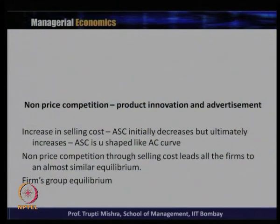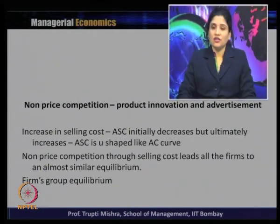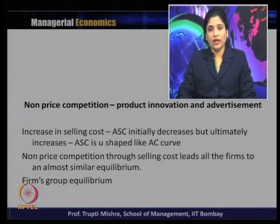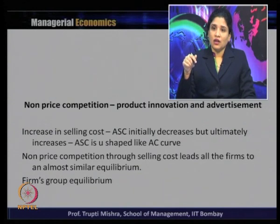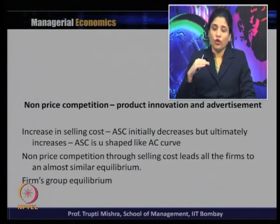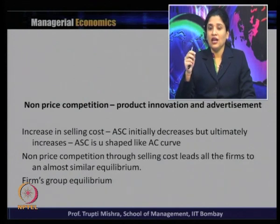Whenever there is an increase in selling cost, the average selling cost initially decreases but ultimately increases, and that is why the average selling cost is U-shaped like the average cost curve. The average cost initially decreases, then reaches the minimum, and then increases. The explanation for the U-shaped average cost is economies of scale initially, then diseconomies of scale beyond the minimum. The same shape applies to the average selling cost.